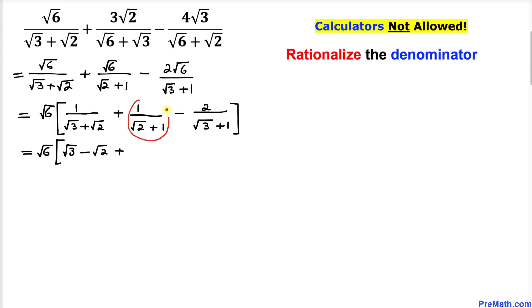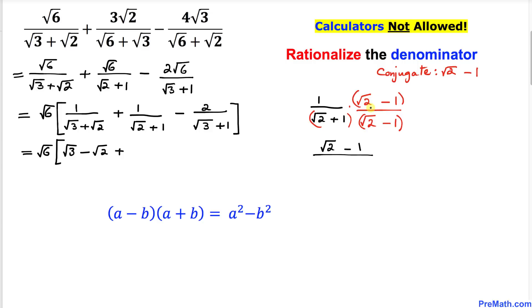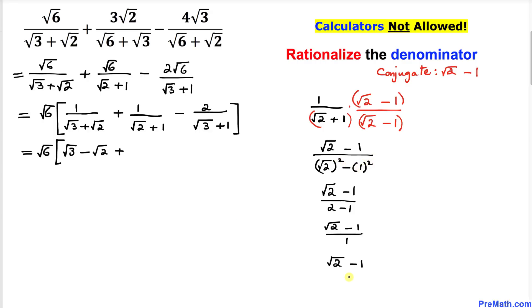For the second fraction, 1 over square root of 2 plus 1, we multiply and divide by its conjugate, square root of 2 minus 1. The numerator becomes square root of 2 minus 1, and the denominator becomes square root of 2 squared minus 1 squared, which is 2 minus 1 equals 1. So the second fraction simplifies to square root of 2 minus 1.